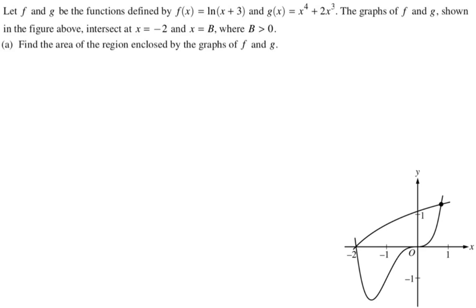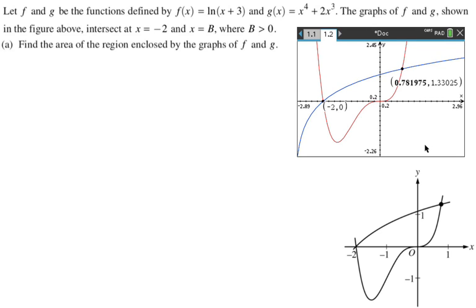And so for the first part, we want to find the area of the region enclosed by the graphs of f and g. So what I've done, I need to find b, right? So I graphed both of them, I found the intersections, obviously one of them is at negative 2, 0, because we're told x equals negative 2. The other one is at 0.781975, and I'm going to store that on my calculator as b.